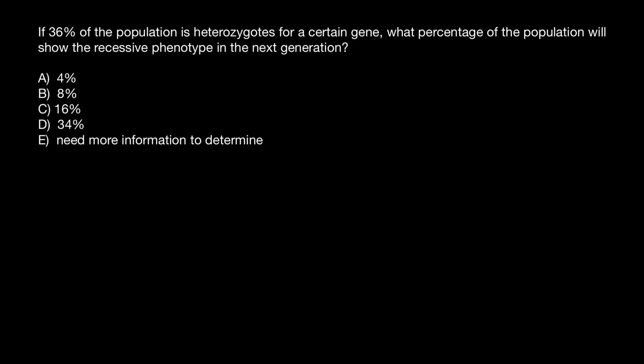Here are the answer variants. If you think that we cannot solve this with the given information because we need more information to determine the correct answer — actually, there are two ways to answer this question. First, we have to choose answer E: 'need more information to determine,' but only because we don't know whether this population is in Hardy-Weinberg equilibrium or not. Nothing is stated that this population is in Hardy-Weinberg equilibrium.